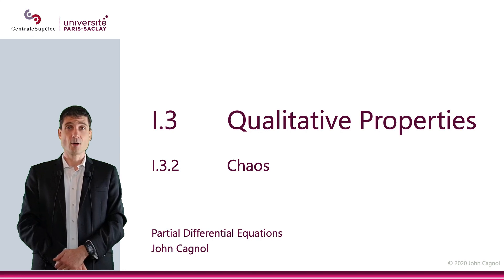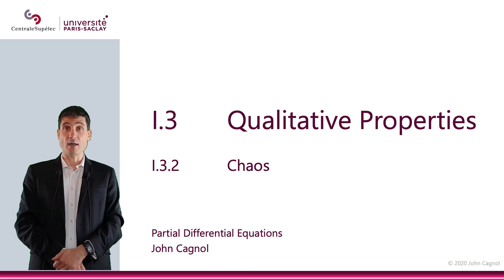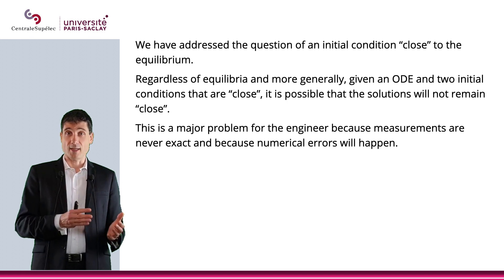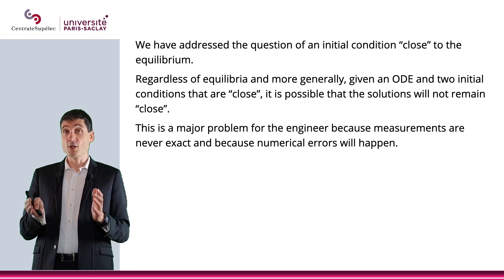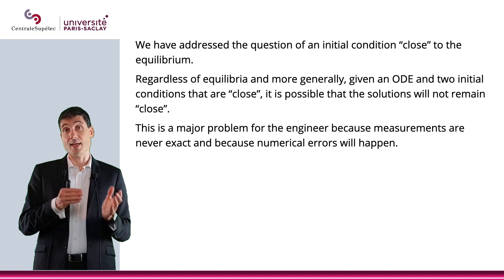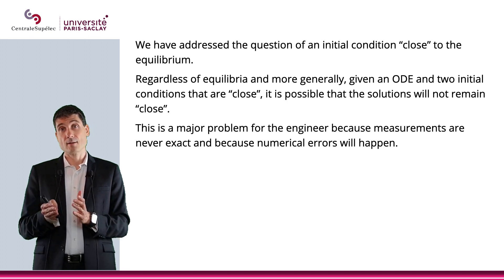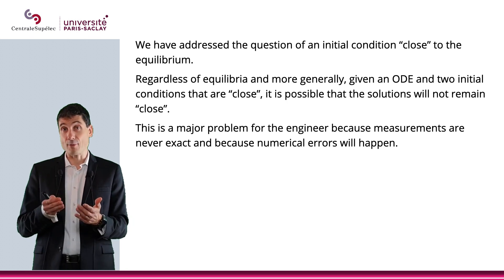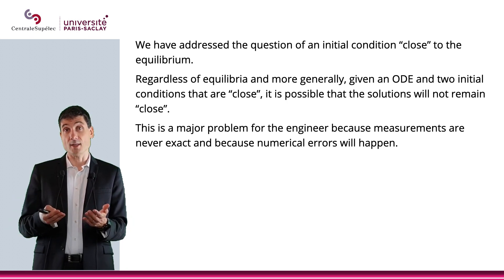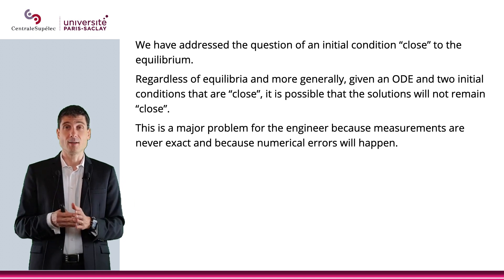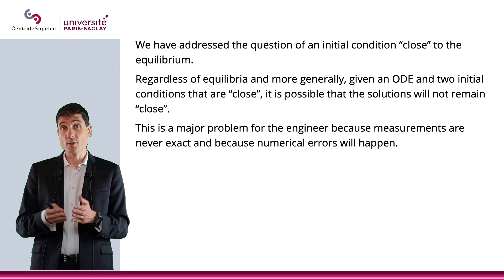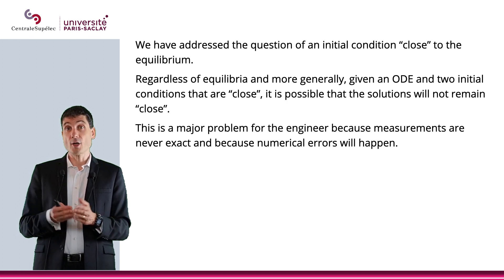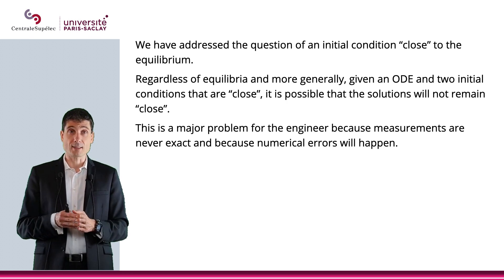In this video, we will talk about chaos. In the previous video, we discussed the situation of the initial condition being close to the equilibrium and what would happen — whether the solution to the ODE or to the IVP with that initial condition would actually stay close to the equilibrium or not. That was the question we addressed.